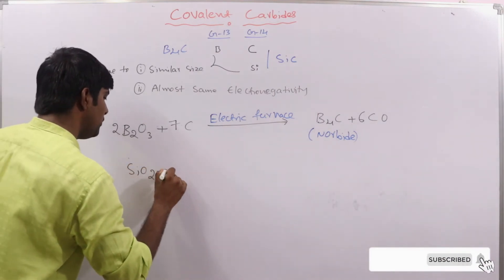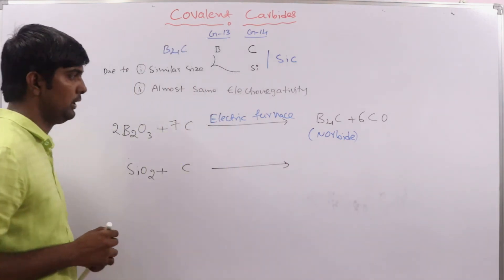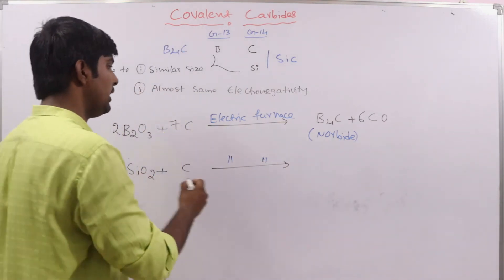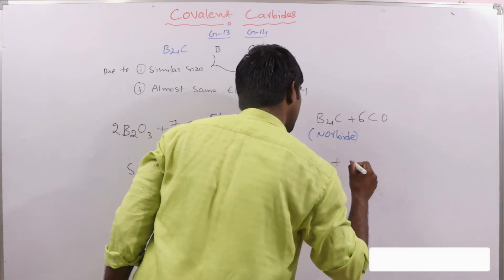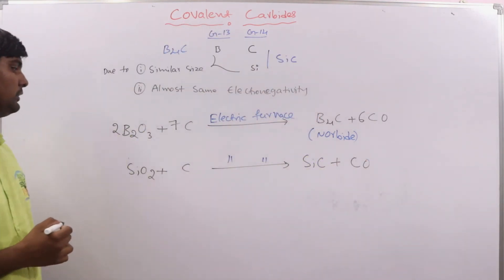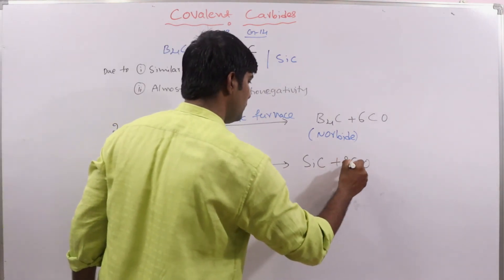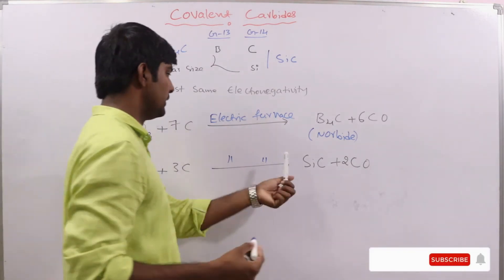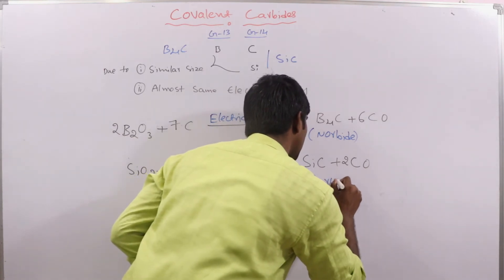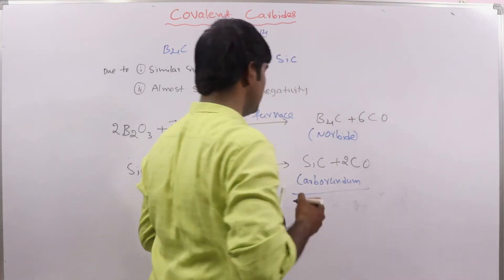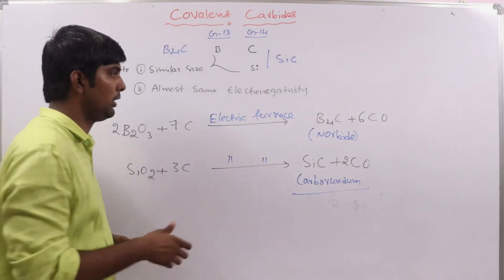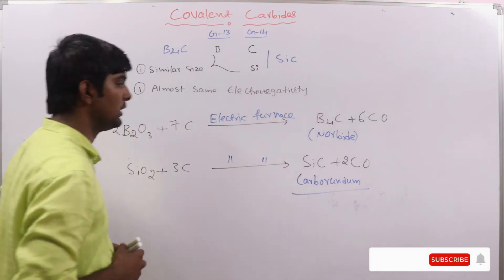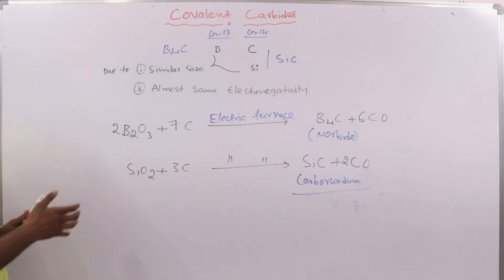For silicon carbide: when SiO₂ is reacted with excess coke in an electric furnace at higher temperature, we get silicon carbide (SiC) plus carbon monoxide. The balanced reaction requires 3 moles of carbon. Silicon carbide is also well known by its common name carborundum, while boron carbide is called norbide.